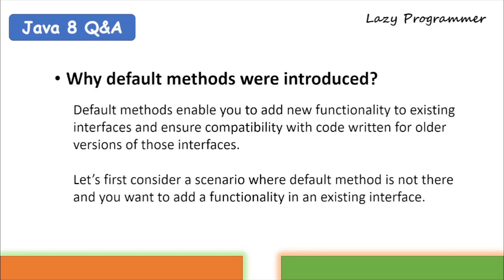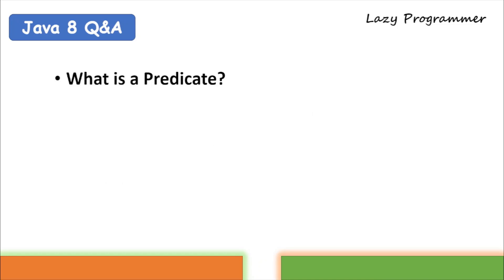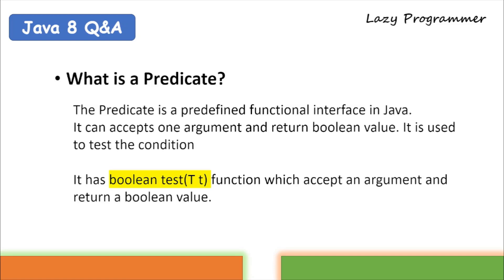Java 8 also provides a long list of built-in functional interfaces. One of them is Predicate. The interviewer might ask: what is a Predicate? Predicate is a predefined functional interface in Java that accepts one argument and returns a boolean value. It is used to test a particular condition based on the data provided as an argument. Its abstract method is named test, which accepts one argument of any type and always returns a boolean result.